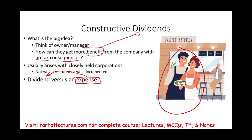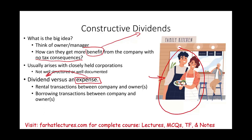Just to give a few examples: rental transactions between the company and the owners. For example, if a couple owns a restaurant, they own the business building separately and rent the building to themselves to run the restaurant. So there's a rental transaction between the two — are they charging fair market value or not? We'll talk about that.